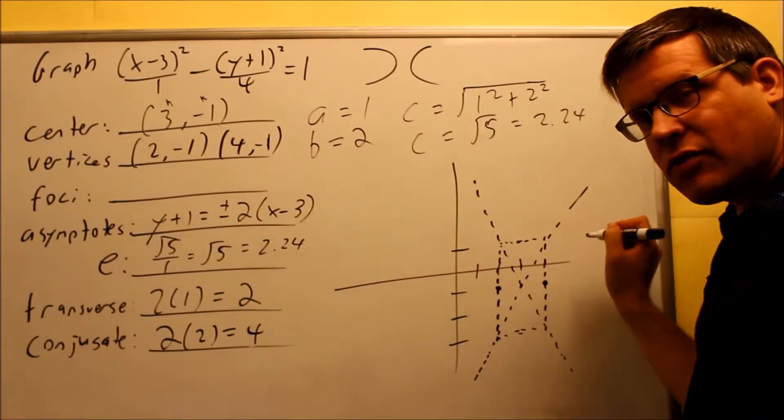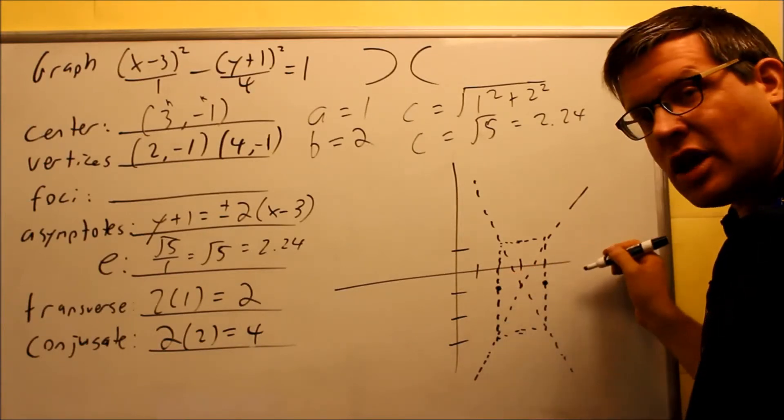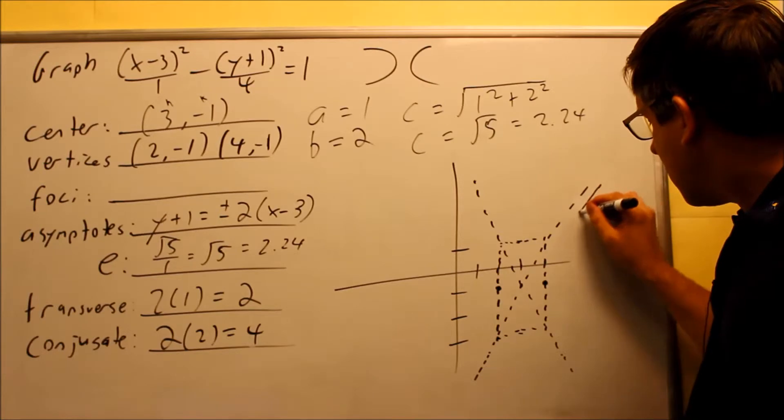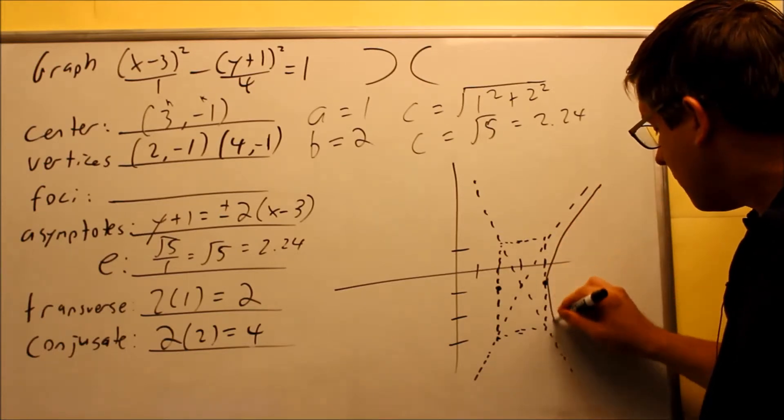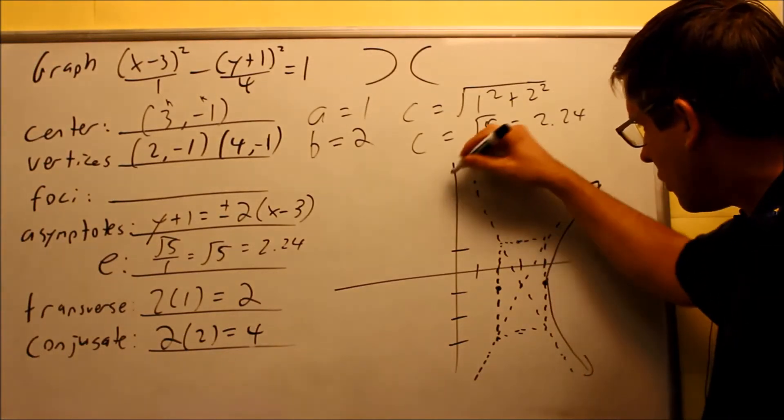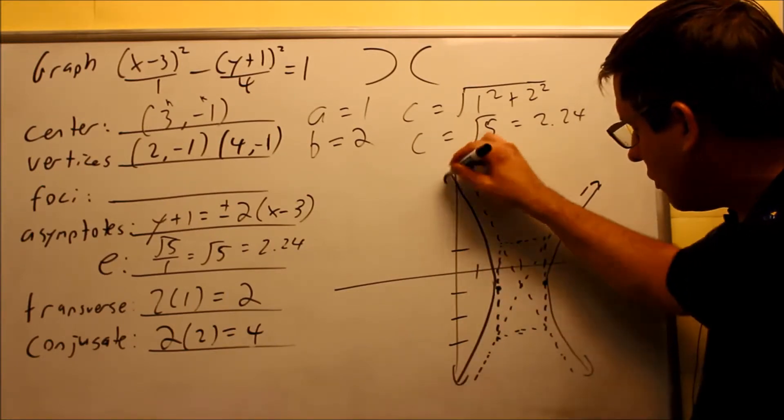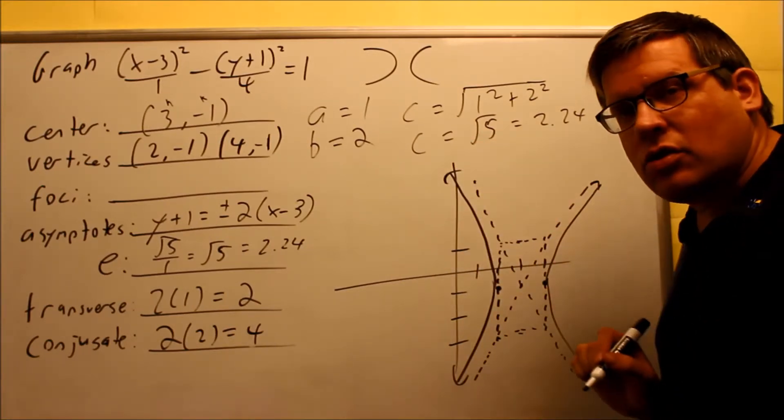So now this is going to open up to the left and the right. And we have these two dots that it's actually going to go through. So it follows this one right here, this asymptote. It'll hit that dot, come down and follow that one. This one will do the same thing. Hit the dot and come down like that. It opens up to the left and to the right.